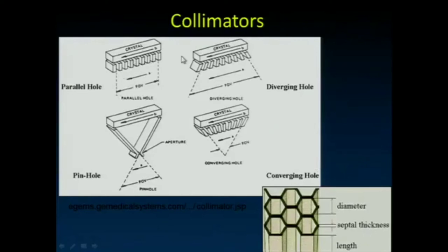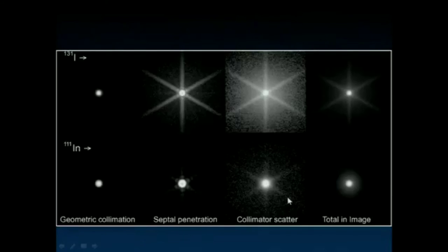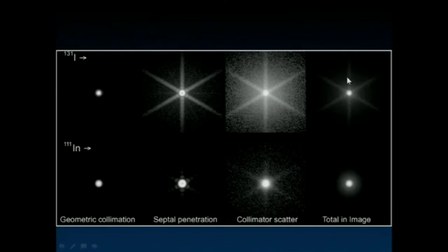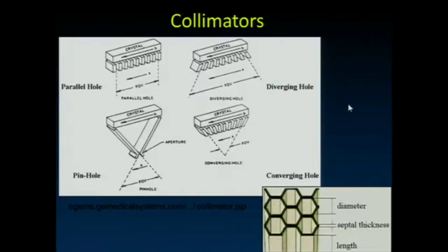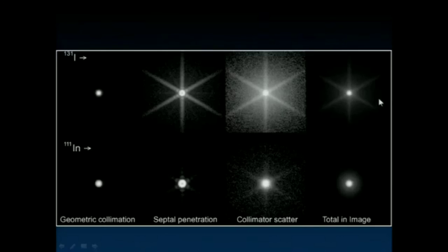Collimators are made from lead, often from corrugated lead pieces that when stacked together form hexagonal holes. For higher energy radionuclides like I-131 — which is a beta emitter but also produces high energy gamma rays — those gamma rays can pass right through the thin lead septa of some collimators. This produces a septal artifact with a star pattern that corresponds to the orientation of the walls in the collimator.